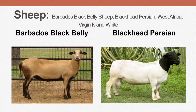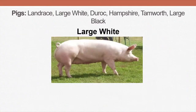For sheep breeds, we have the Barbados Black Belly and we have the Black Persian. If you look carefully, you are seeing that black belly as outlined here in the picture. Those are some breeds that we have in our region.